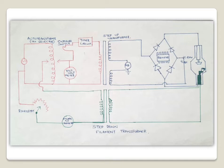The part shown in blue color is the secondary or high voltage circuit. Here you can find a step-up transformer, whose function is to convert low voltage to high voltage. The step-up transformer is connected to a rectifier, whose function is to convert alternating current to direct current. The rectifier is finally connected to the x-ray tube.